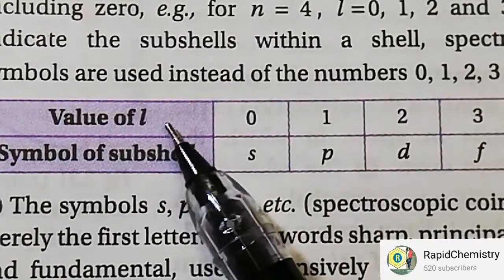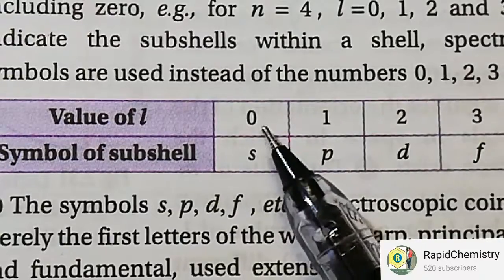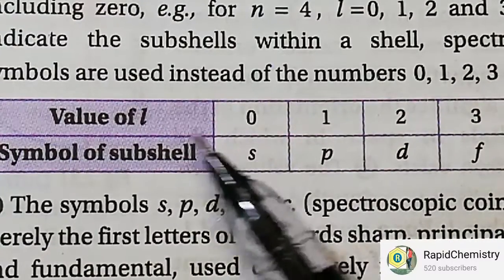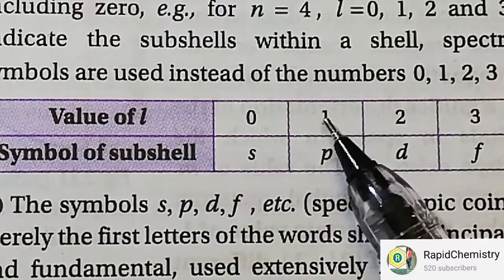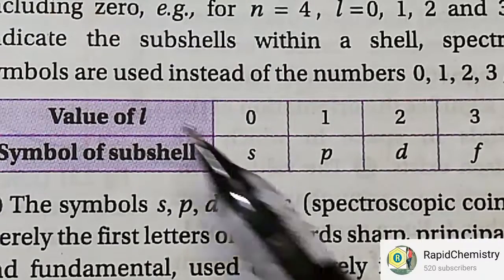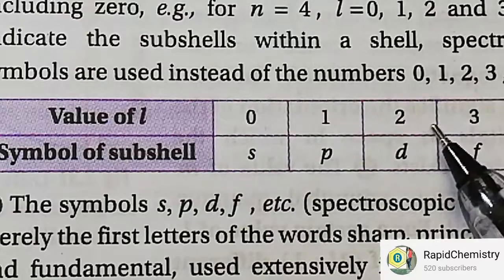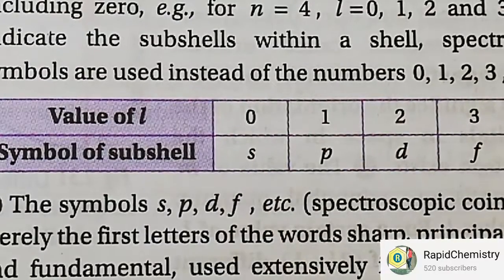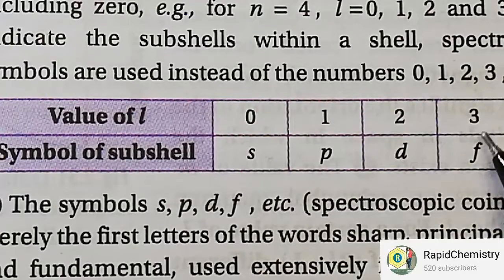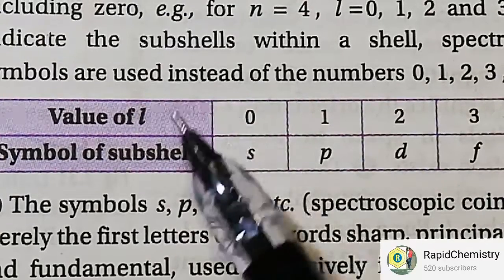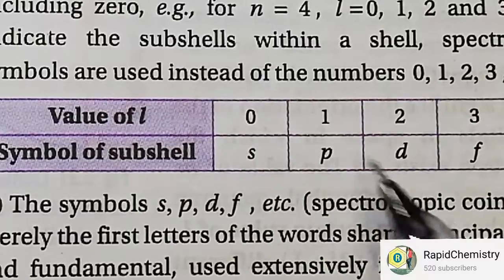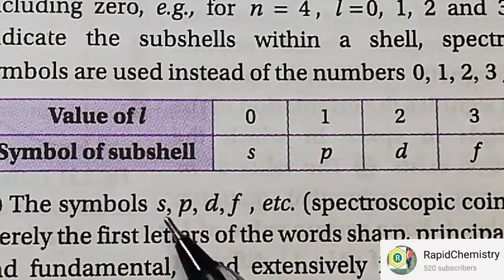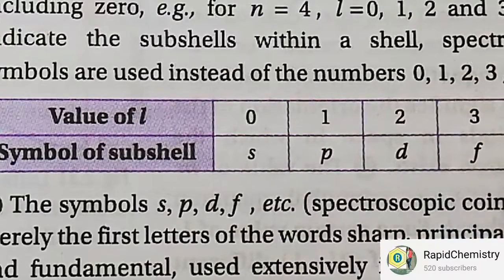For the azimuthal quantum number value L: when L equals 0, the subshell is S; when L equals 1, the subshell is P; when L equals 2, the subshell is D; and when L equals 3, the subshell is F. You have to remember that for L values 0, 1, 2, 3, the respective subshells are S, P, D, F.